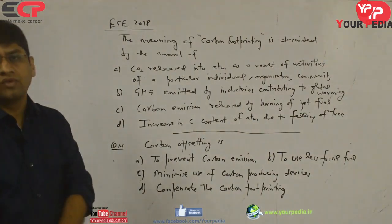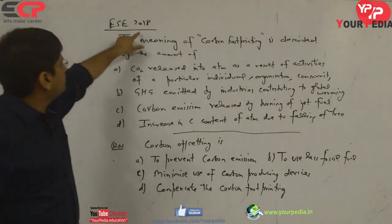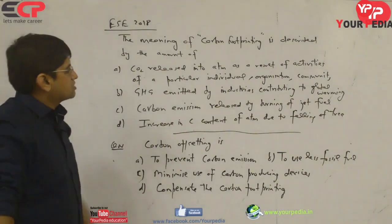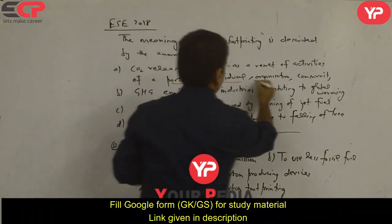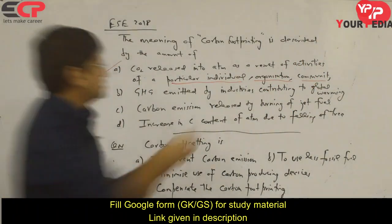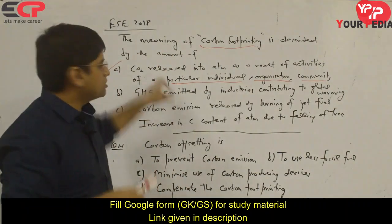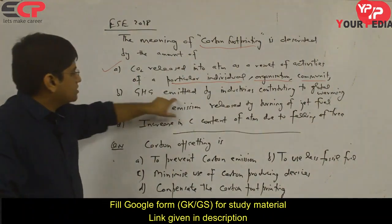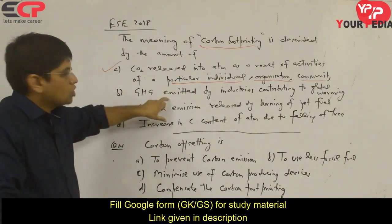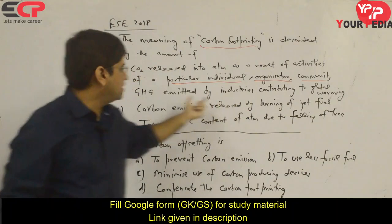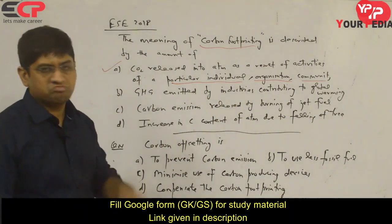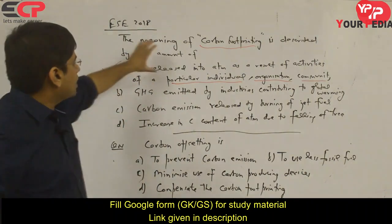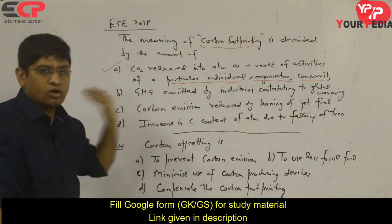This question was asked in the 2018 preliminary exam. 'The meaning of carbon footprinting is described by the amount of...' The correct choice: carbon dioxide released into the atmosphere as a result of activities of a particular individual, organization, or community. That is the definition of carbon footprinting. Other choices — greenhouse gases from industries, carbon from jet fuel burning, or carbon from felling trees — do not match. So the first choice is correct.